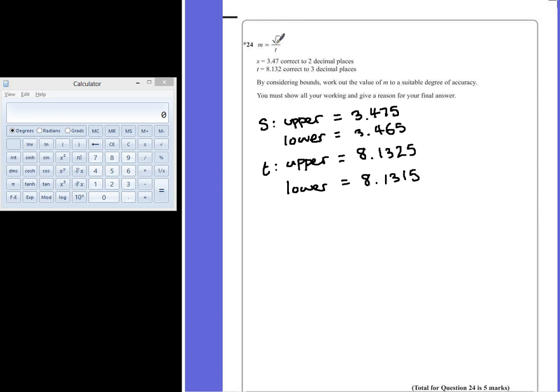So to find the biggest answer, we want the biggest number on the top and the smallest number at the bottom. So for one possible answer, we're going to take our upper bound for s, so we're going to find the square root of 3.475 and divide that by the smallest number at the bottom, which will be 8.1315. So if we put this into our calculator, this is 3.475 square root of that value, divide that by 8.1315, I get 0.2292486 with a bunch of other numbers afterwards.